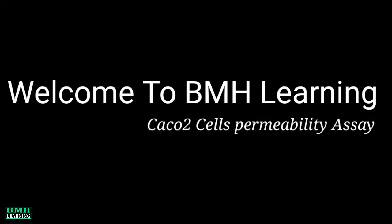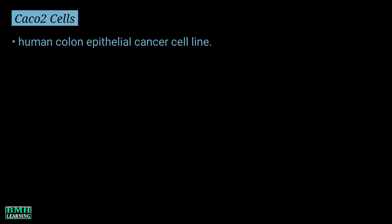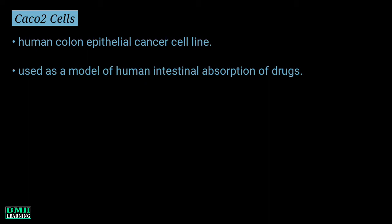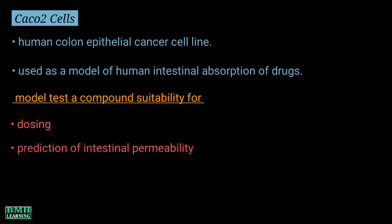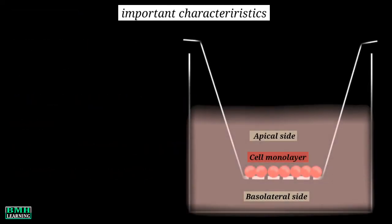Welcome to BMH Learning. In this video we are going to discuss about CACO2 cells permeability assay. CACO2 is a human colon epithelial cancer cell line used as a model of human intestinal absorption of drugs. This model can test a compound's suitability for oral dosing, prediction of intestinal permeability, and also investigation of drug efflux.